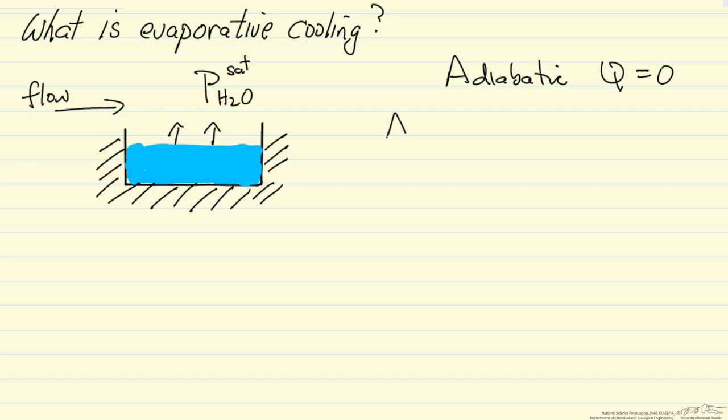And so what we want to do is do an energy balance on this system. And so delta U is Q plus W, that's for a closed system, but now this is an open system, so we have an additional term due to the enthalpy change because of energy flowing out.